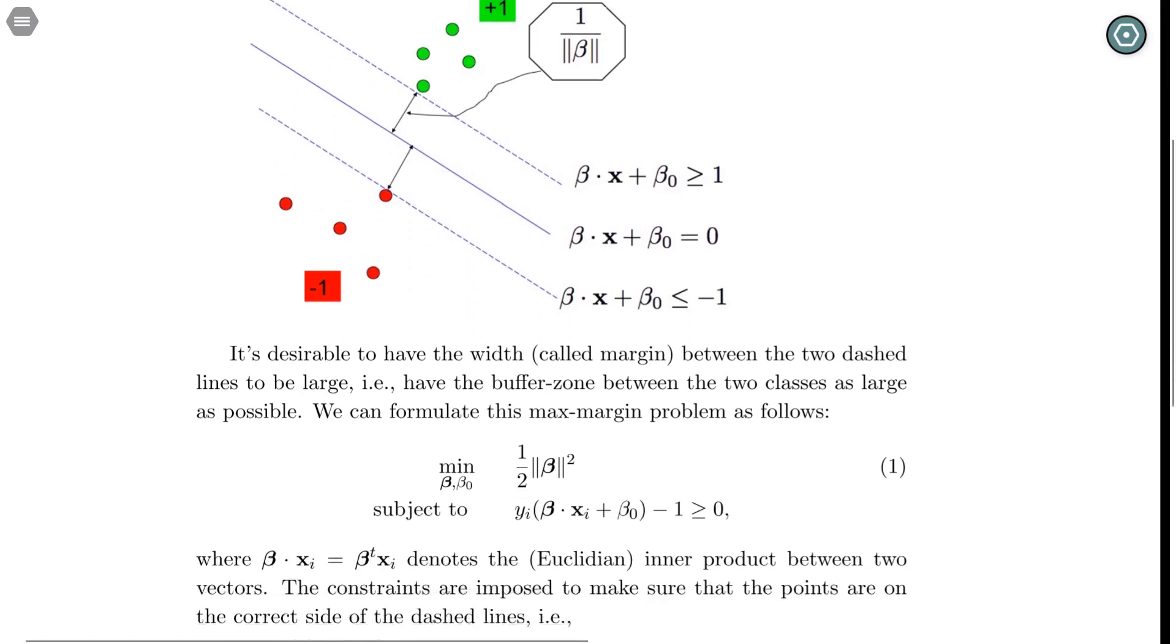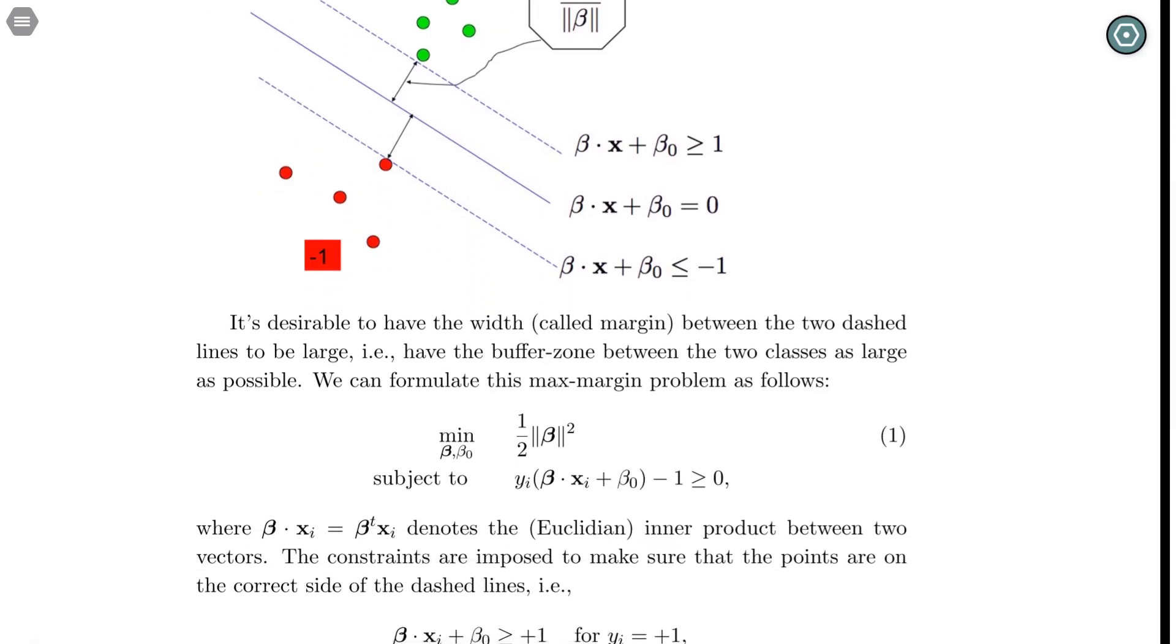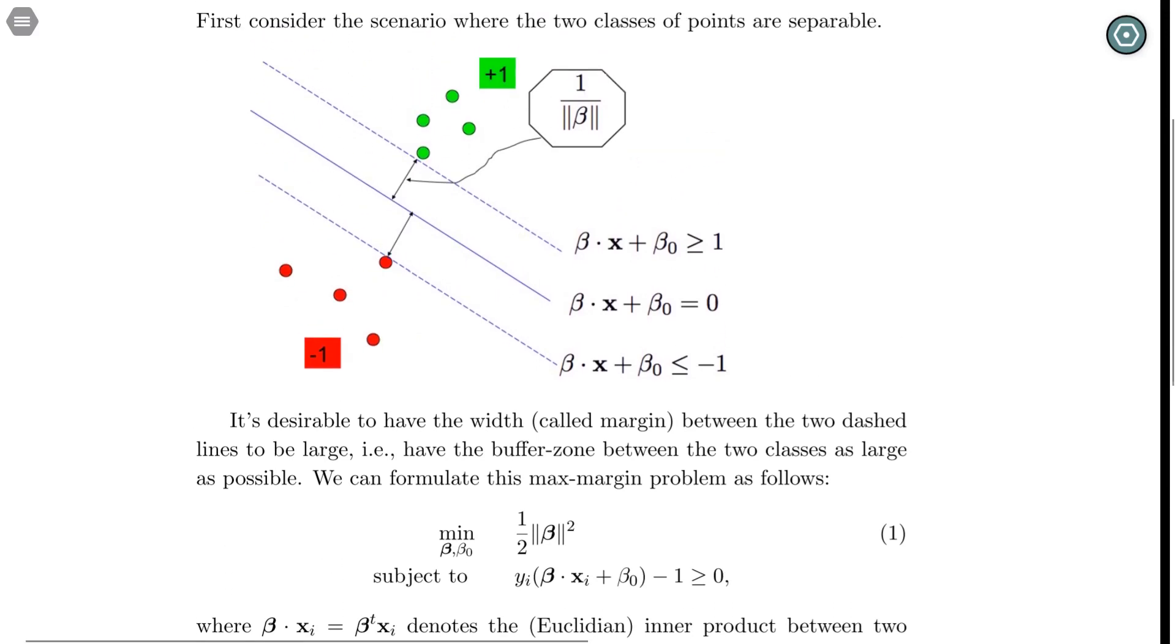That problem can be formulated as the following constraint optimization problem, where the constraints require the two groups of data points are located on the correct side of the dashed lines.